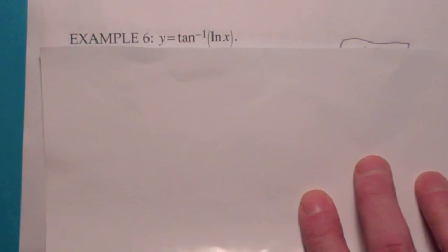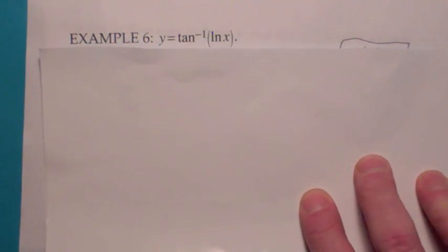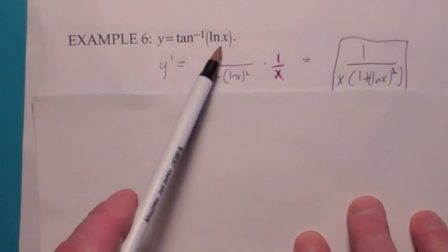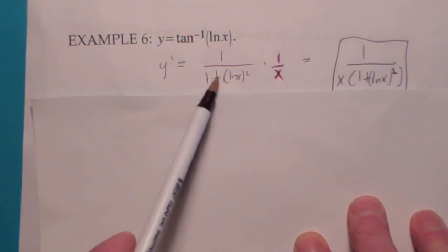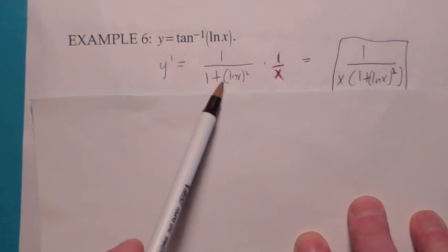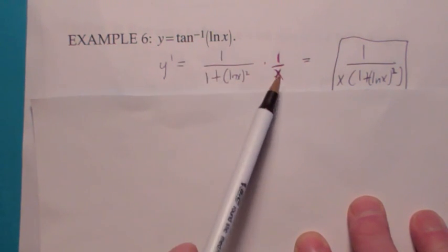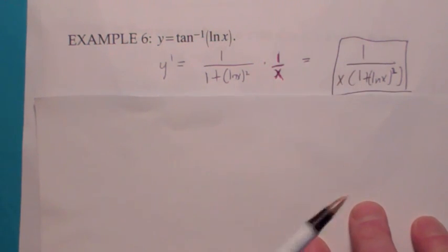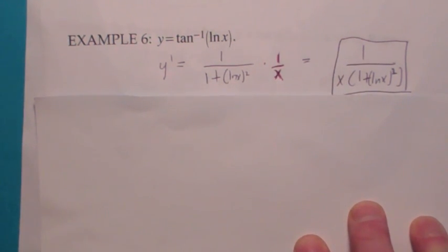Don't get it confused with this one. This is actually the inverse tangent of the natural log of x. Remember, the derivative of the inverse tangent of something is 1 over 1 plus that something squared. Then you have to take the derivative of what's inside, so you pick up a 1 over x there. Your final answer is 1 over x times the quantity 1 plus natural log of x, squared.